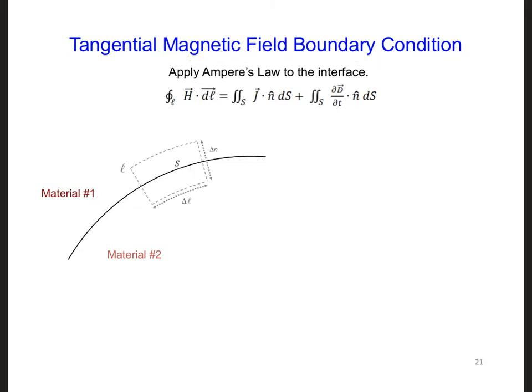We can use the same shape for the surface S, a rectangular surface. When we collapse the surface S by taking delta N to 0 along the material interface, on the left side of Ampere's Law, we get H tan 2 times delta L minus H tan 1 delta L. This is analogous to what we had before with the electric field.